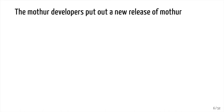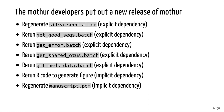Let's think about that initial example: the Mother developers put out a new release. What all would we have to change? Well, we'd have to regenerate silva.c.align — this explicitly depends on Mother. We'd have to rerun getgoodseeks.batch, getairbatch, getsharedotusedbatch, getnmdsbatch. We'd have to rerun our R code and generate the figure — this is what we might consider an implicit dependency. To run the R code we don't use Mother directly, but we use files generated by Mother. So the output of getsharedotused.batch goes into getnmdsbatch, and that data generated by Mother is then run in R. Finally, we'd have to regenerate manuscript.pdf — Mother isn't used directly to generate it, but information that goes into it was at one point generated by Mother.